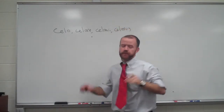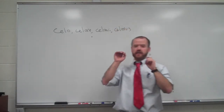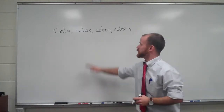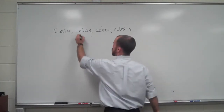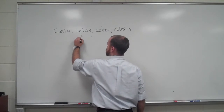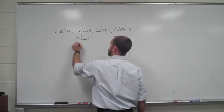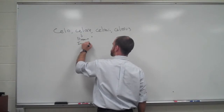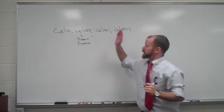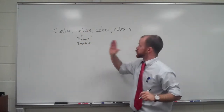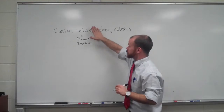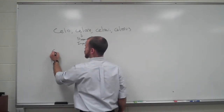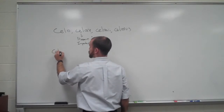Alright, so the present and the imperfect tenses use a stem based on the second principal part. To get the stem, all you have to do is chop off the -re, and that's it — that's your stem: kella. So the present looks like this.